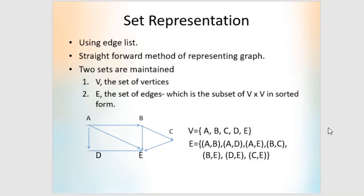Now let us see the set representation, which is a very straightforward method of representing a graph. A graph can be represented as a combination of the set of vertices and the set of edges: G = (V, E). Here the graph has five vertices: V = {A, B, C, D, E}. The edge set E = {(A,B), (A,D), (A,E), (B,C), (B,E), (D,E), (C,E)}. This is a very straightforward method of representing graphs.